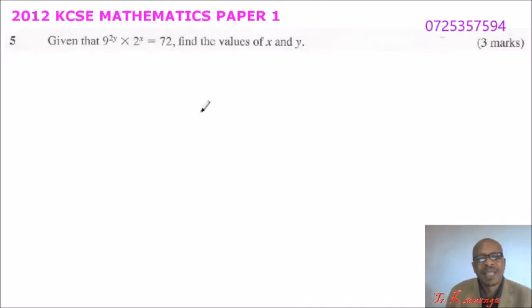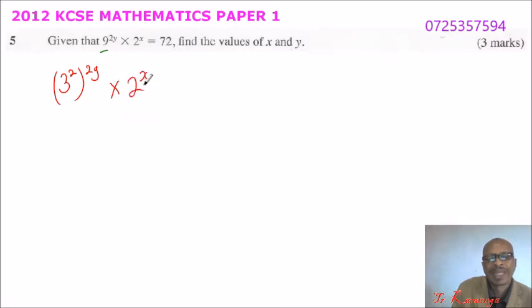This is from the topic indices which you did in form 2. If you take this 9, 9 is the same as 3 squared. You can write 9 as 3 squared raised to power 2y. You multiply by 2 to power x. You can't change that. That is at its lowest form.